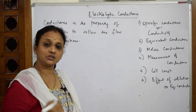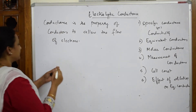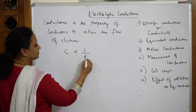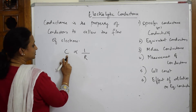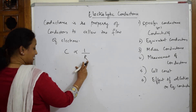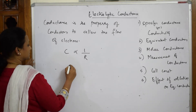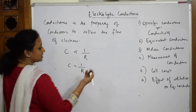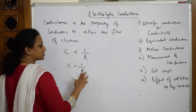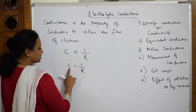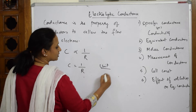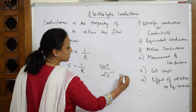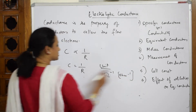If I denote conductance as capital C, then C is always inversely related to its resistance R. So conductance C is equal to 1 by R. The unit for conductance is Ohm inverse.